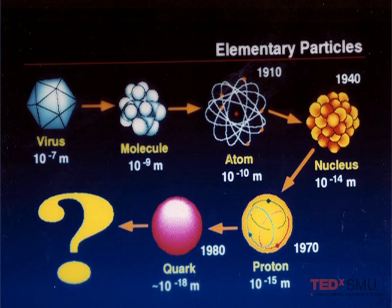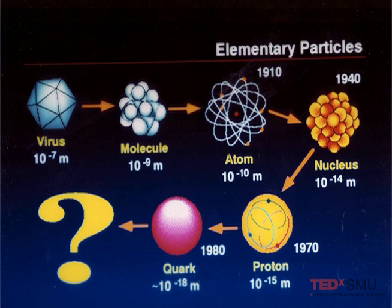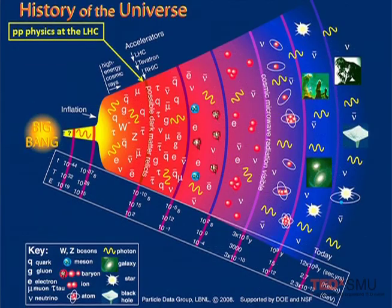Of course, what is elementary depends when you ask this question. A hundred years ago, the atoms were elementary. We then discovered that atoms have nuclei, and then there are protons and neutrons inside those. And then some 40 years ago, we discovered that inside those there are even smaller objects — very heavy — called quarks. Now we don't know if there is anything smaller than that.